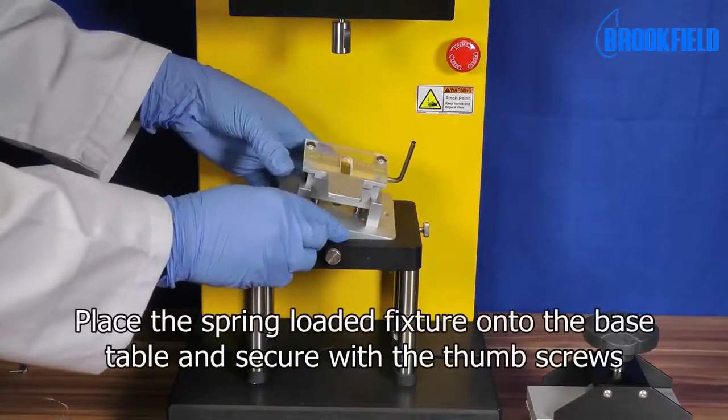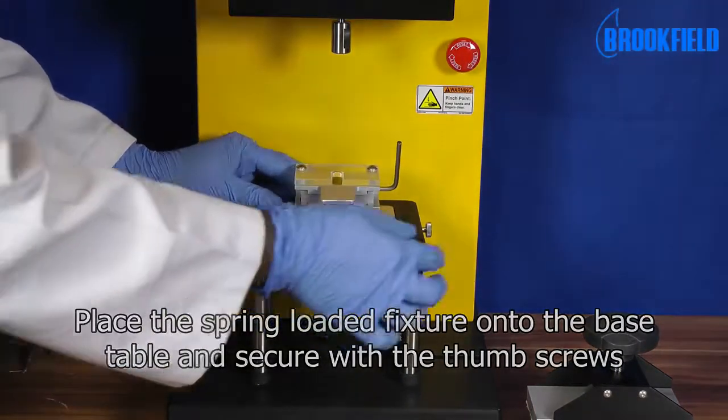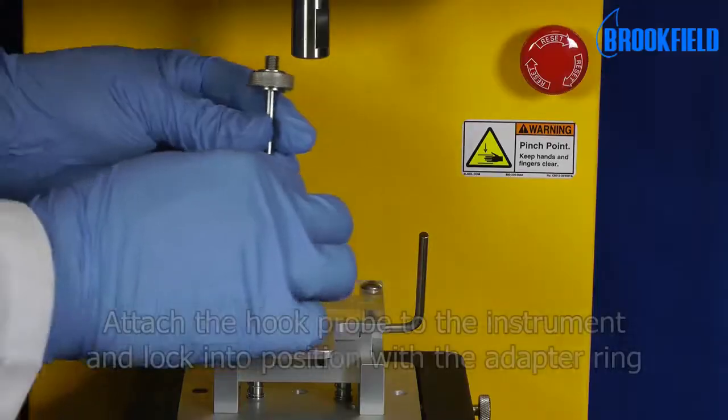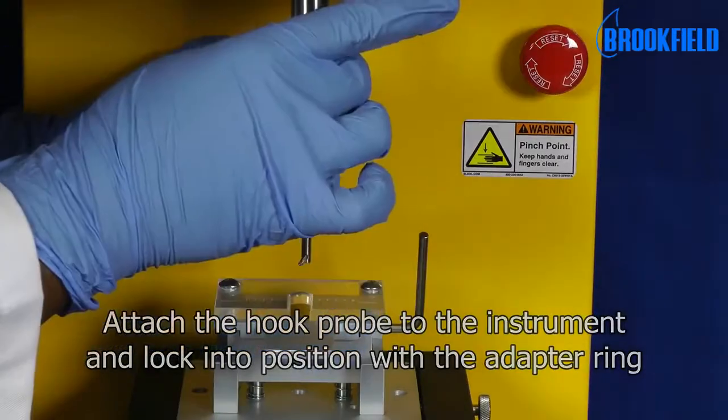Place the spring-loaded fixture onto the base table and secure with the thumb screws. Attach the hook probe to the instrument and lock into position with the adapter ring.